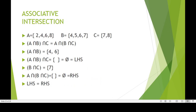For associative intersection: set A = {2, 4, 6, 8}, set B = {4, 5, 6, 7}, set C = {7, 8}. Following the rule (A intersection B) intersection C equals A intersection (B intersection C): A intersection B = {4, 6}. Then (A intersection B) intersection C = empty set — the left-hand side. B intersection C = {7}. Then A intersection (B intersection C) = empty set — the right-hand side. Left-hand side equals right-hand side, demonstrating associative intersection.